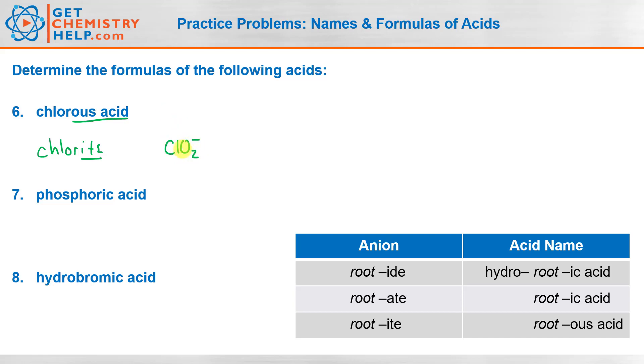But what would the acid be? Well, again, for an acid, the cation is always an H plus. So how many H pluses would I need to combine to neutralize the chlorite? Well, just one because it's one negative. So the acid would be HClO2.